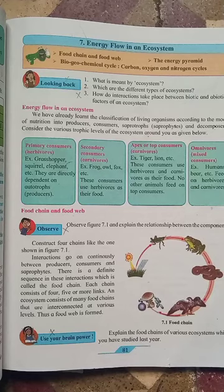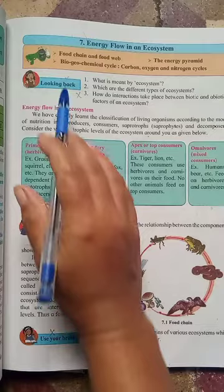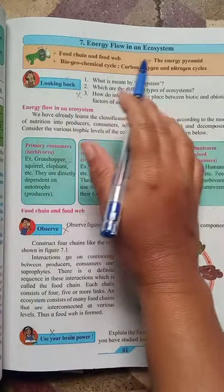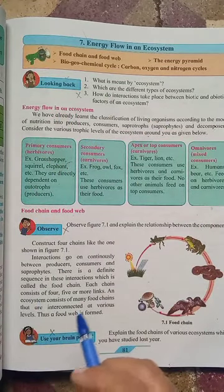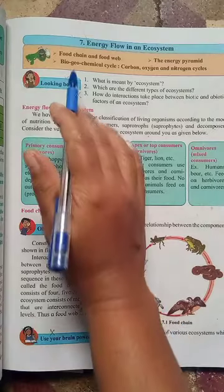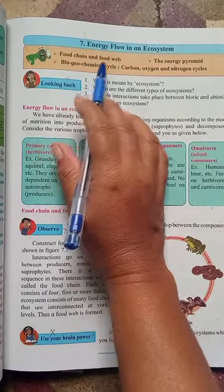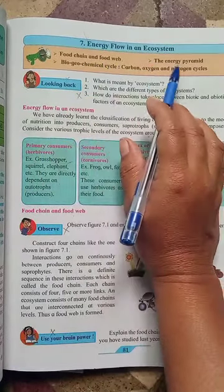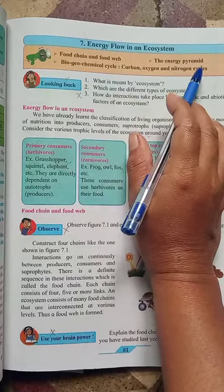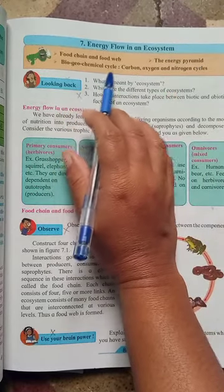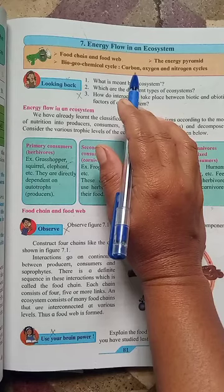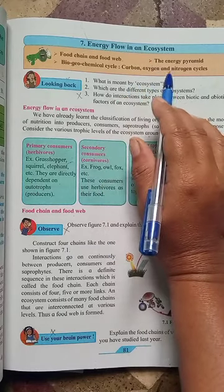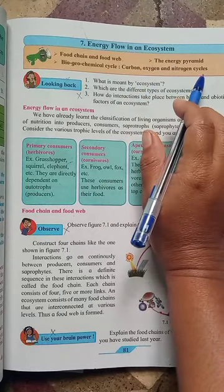Hello students, let's start our next lesson: Energy Flow in an Ecosystem. In this lesson, we have to see the contents — that is food chain and food web, the energy pyramid, and the biogeochemical cycle. In that, we have to learn about the carbon, oxygen, and nitrogen cycles.